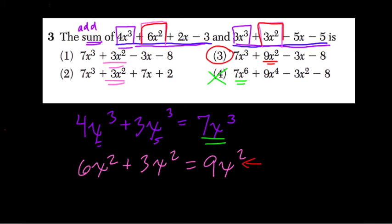But just to check, let's keep going. What if I kept going? Well, I would add 2x and negative 5x. So 2x minus 5x, same thing there. That's negative 3x. And this does have that.